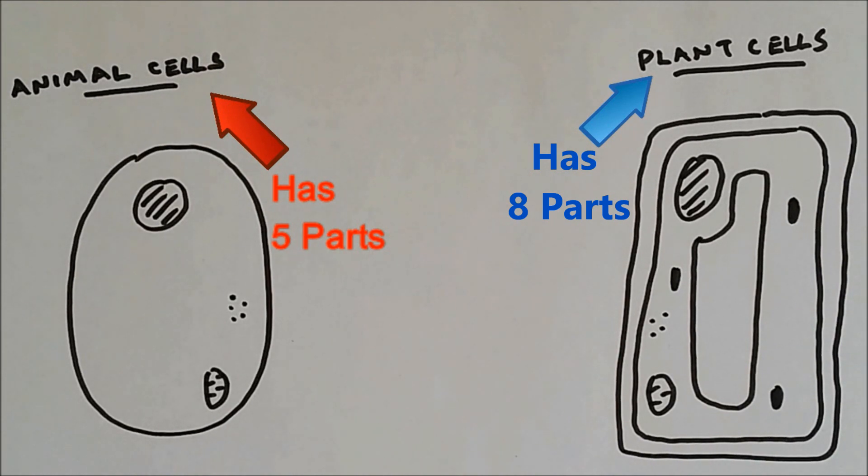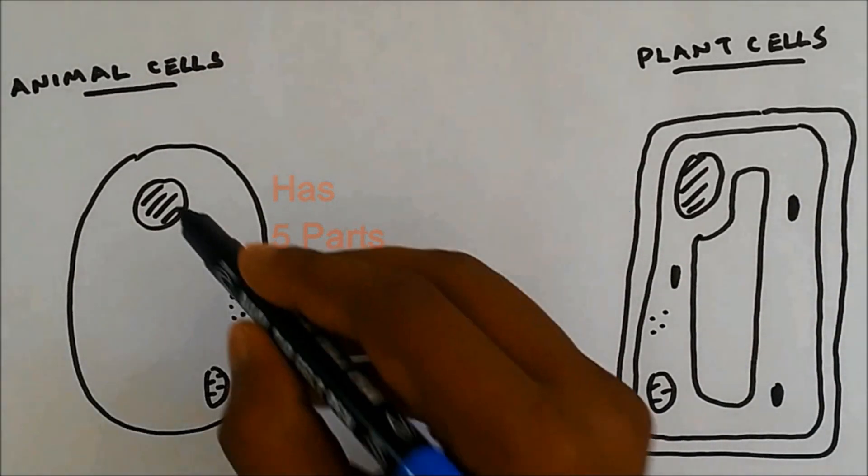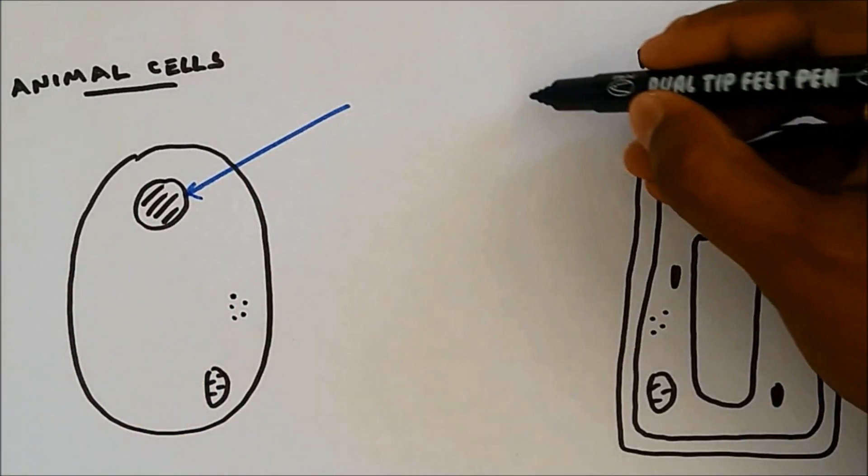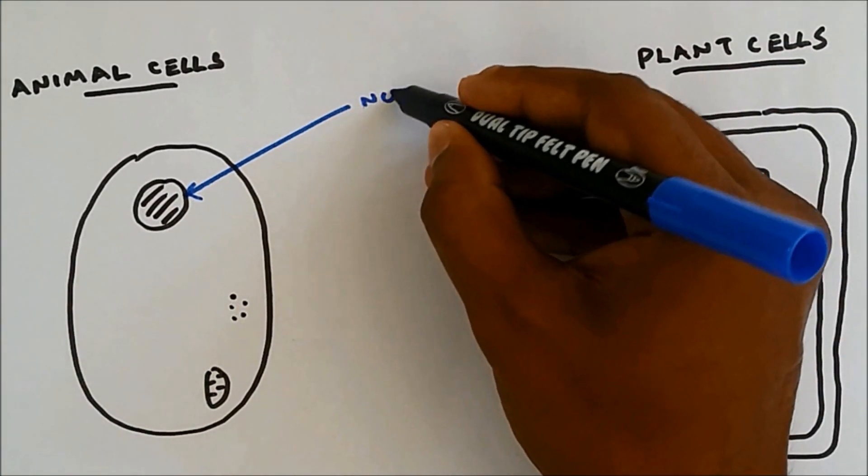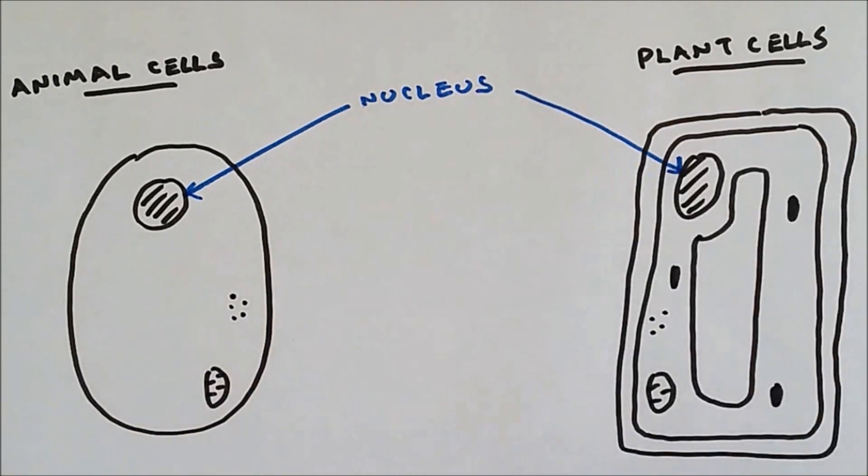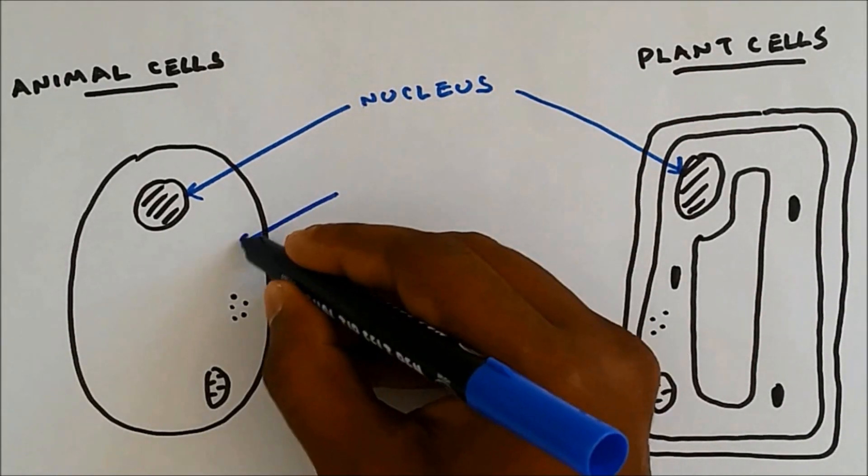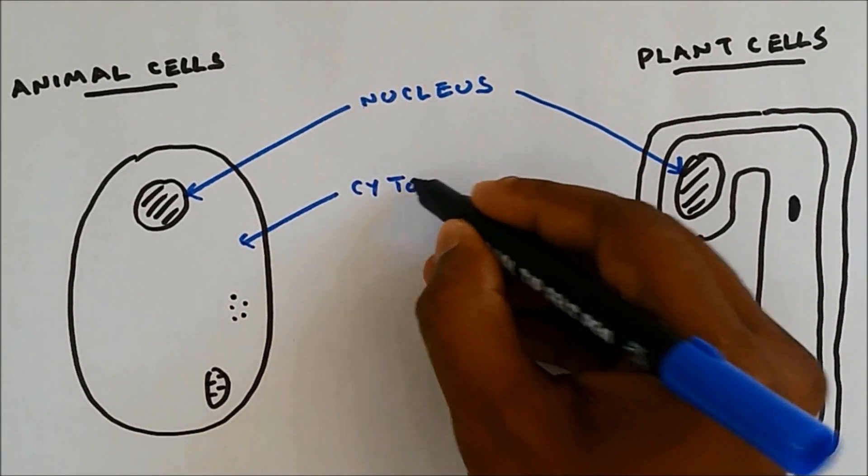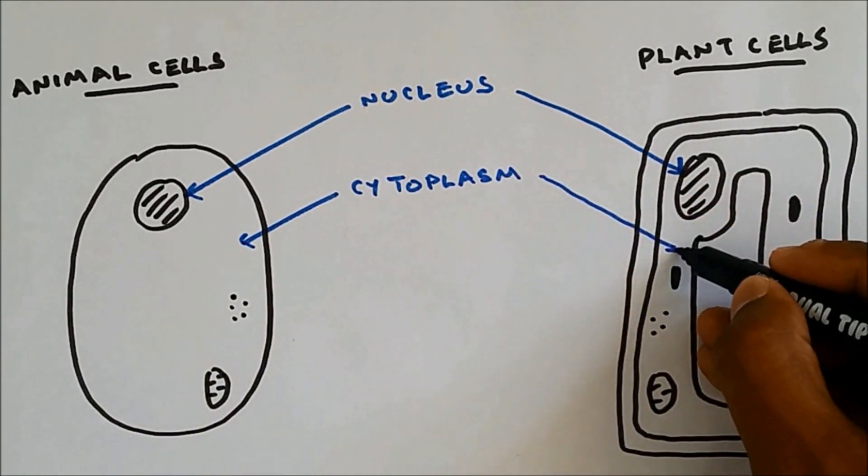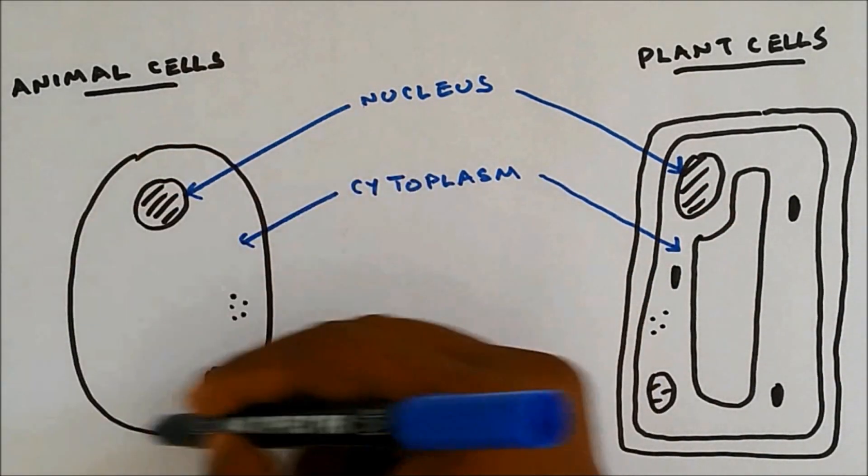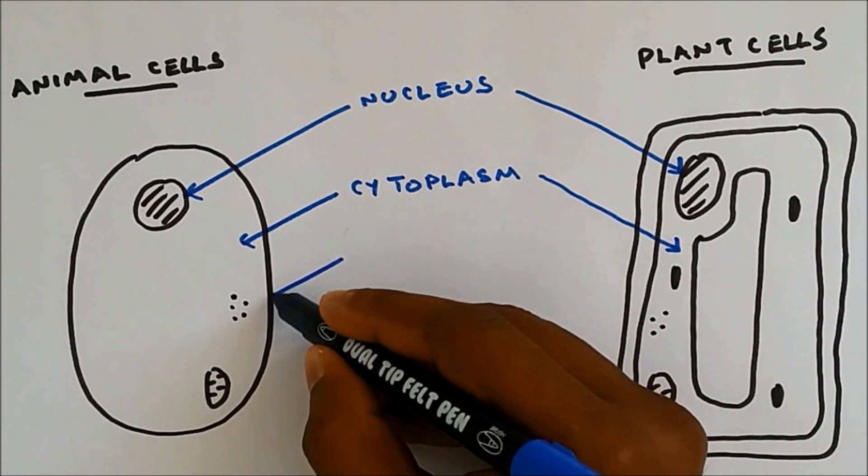So first, I'm going to start with the basic parts of the cell and that is the nucleus. The liquid part of the cell is called the cytoplasm. The outer layer is called the cell membrane.